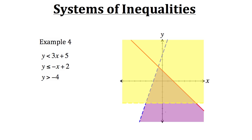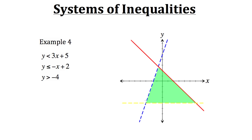Just like with any other system of inequalities, we want to see where all the inequalities in the system overlap. We already know the purple region is where the first two inequalities overlapped — now we zone in on where the purple region overlaps with the yellow region. That leaves us with just this green region. The solution can lie at any point within this green area, as well as along the red line, as long as it stays between the dotted yellow and dotted blue lines. And that's the end of the tutorial on systems of inequalities.